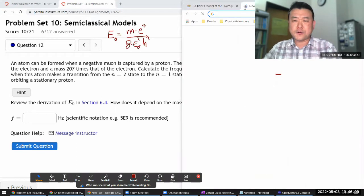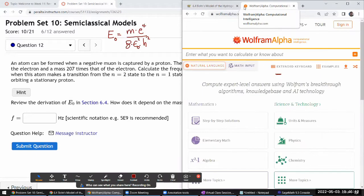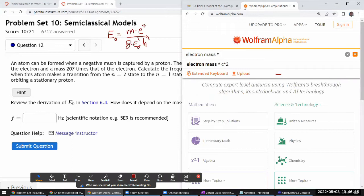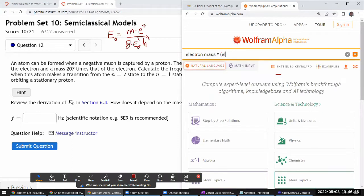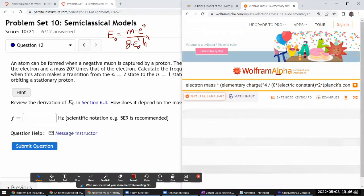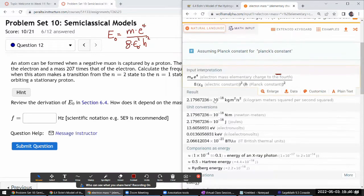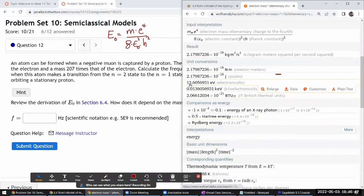Let's just make sure I have copied this down correctly by plugging in numbers. Electron mass times the elementary charge to the fourth power divided by 8 times the electric constant squared times Planck's constant squared. Let's see if it gives me something in units of energy. Looks like it understood me fine. Yeah, 13.6 electron volts. That's what I wanted.